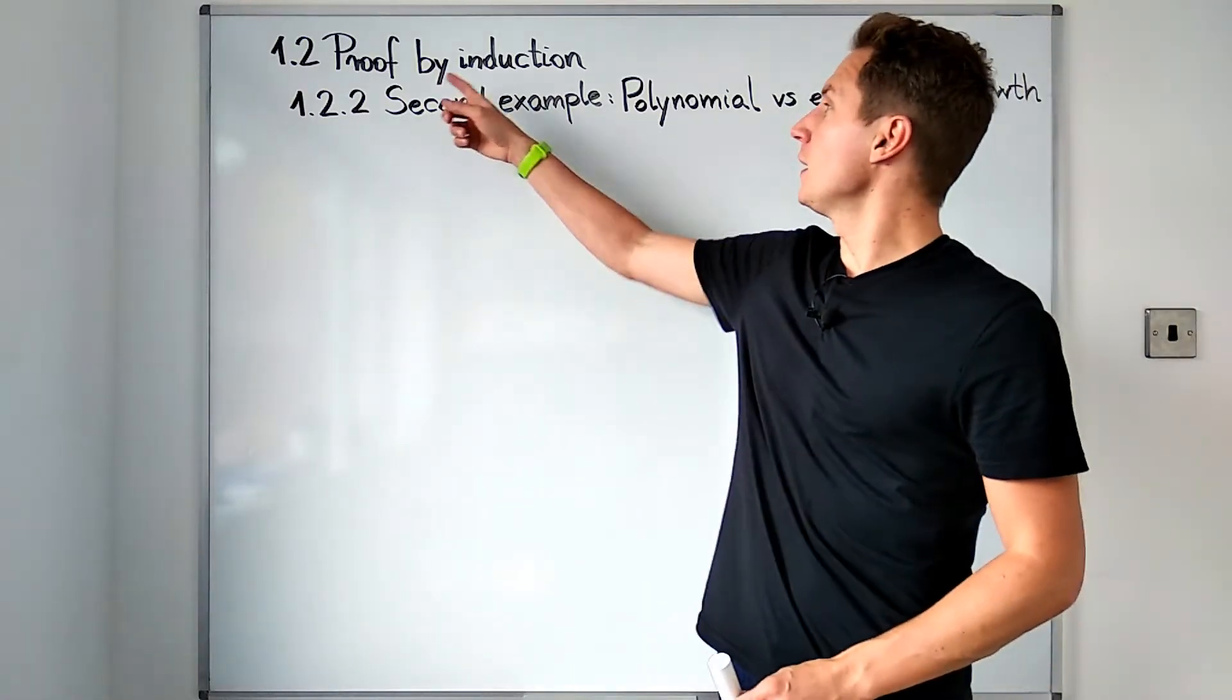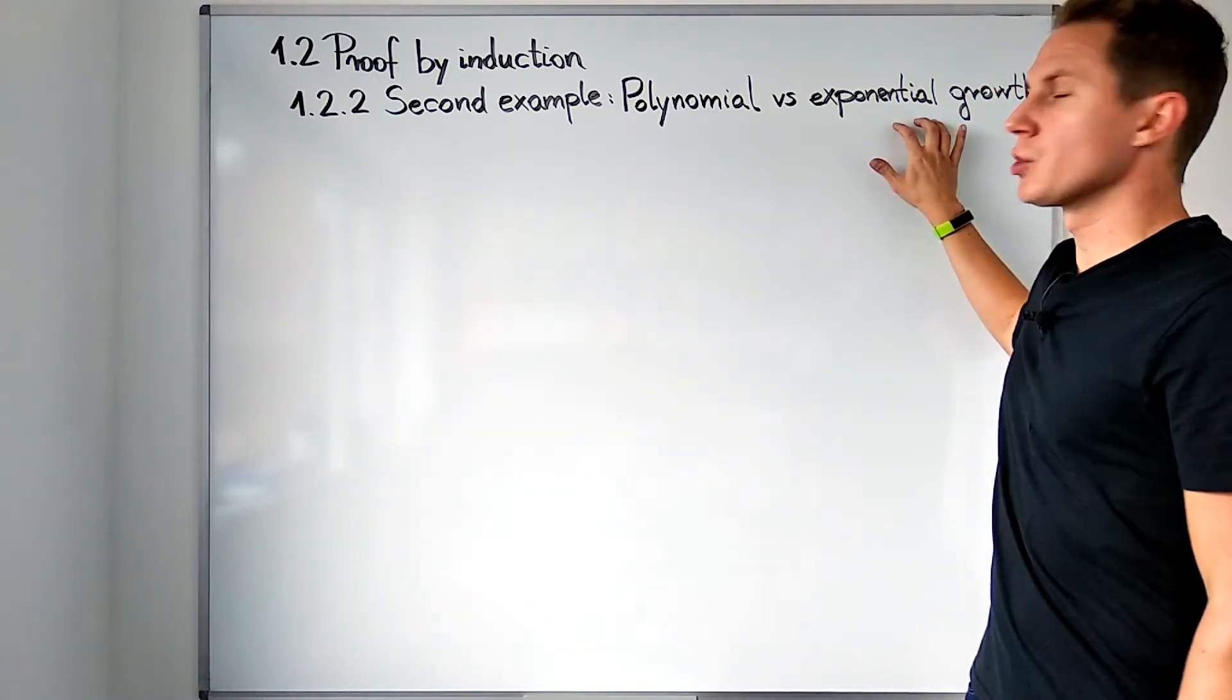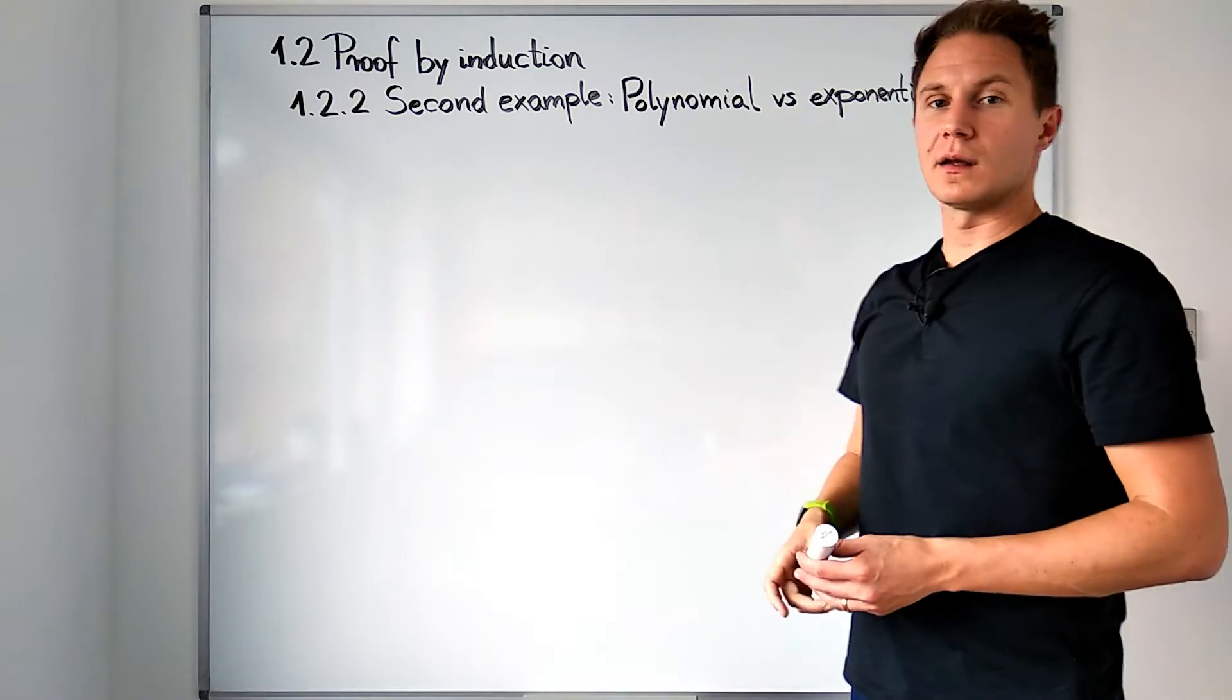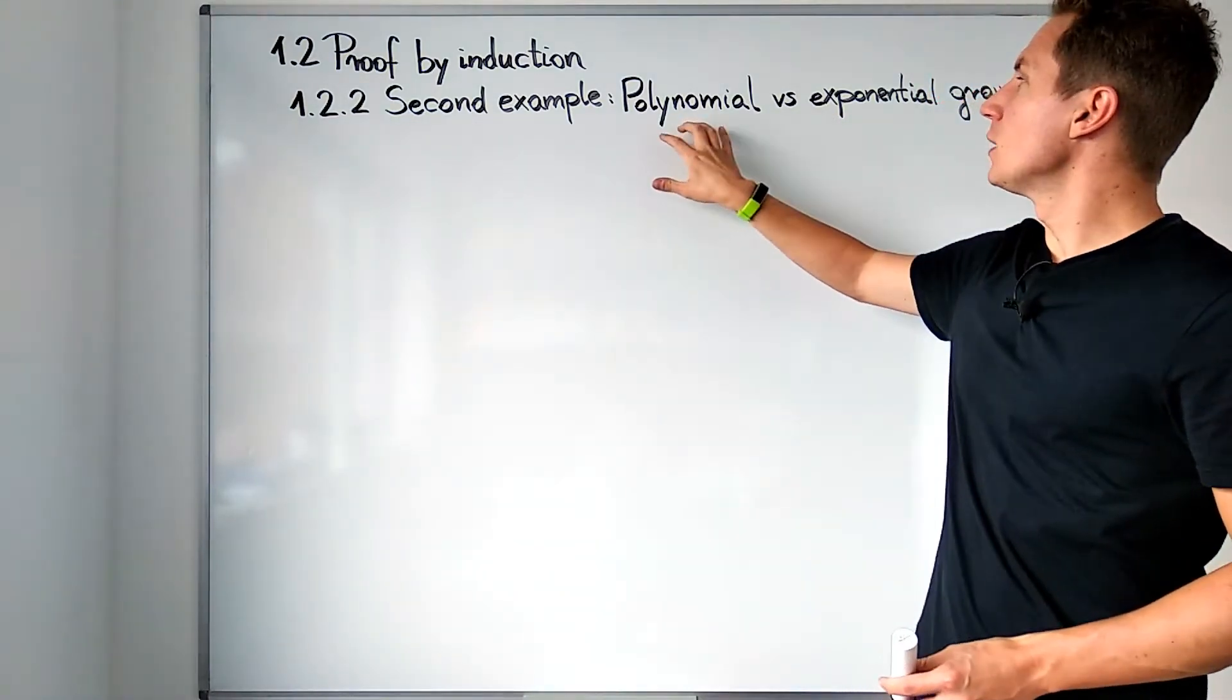In the second example for proof by induction, we are going to compare polynomial growth with exponential growth. We can sum up our result by saying that exponential growth beats polynomial growth.